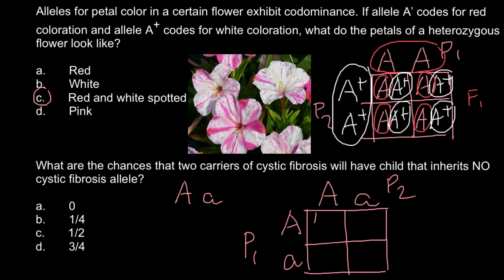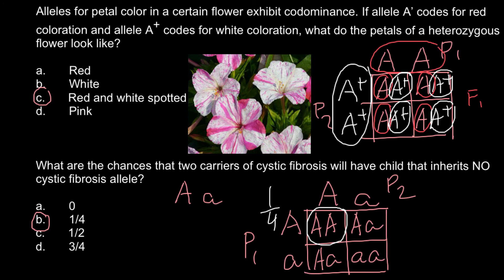As you see, here we don't have a recessive allele, here we have one recessive allele, here we also have one recessive allele, and here we have two recessive alleles. The question is the child that inherits no cystic fibrosis allele, and this is only one such genotype because all the rest of the genotypes would have at least one allele or two alleles. So the correct answer would be B — only one quarter of the progeny would not have the recessive allele for cystic fibrosis.